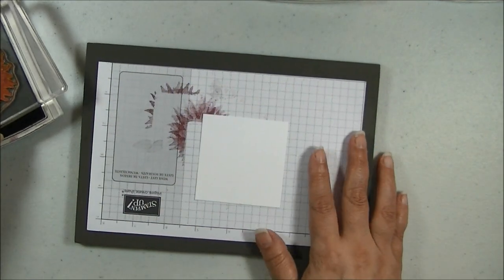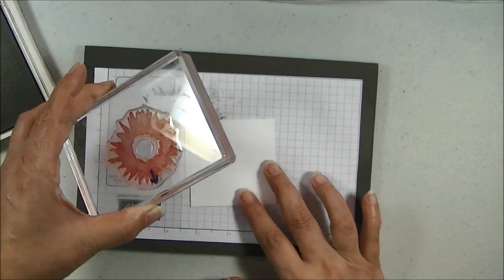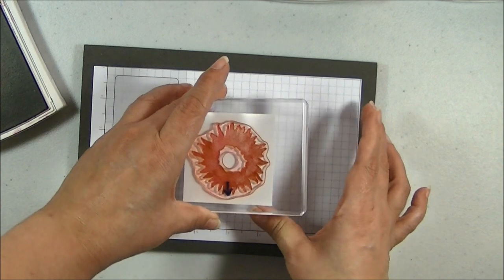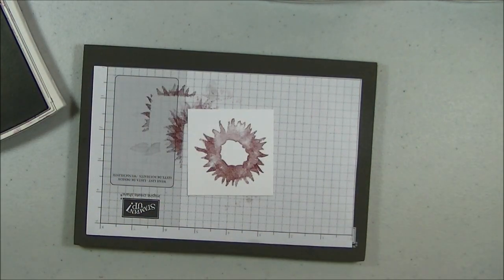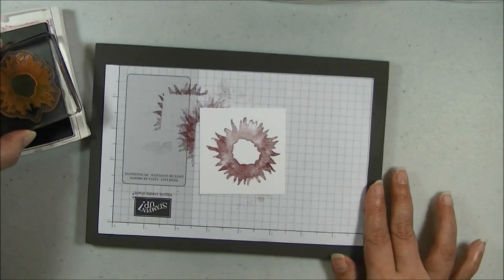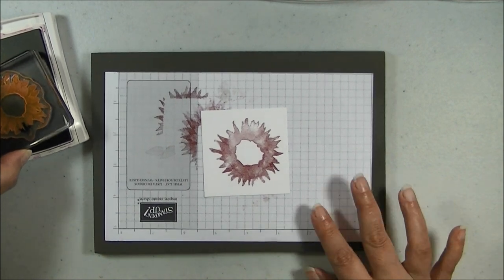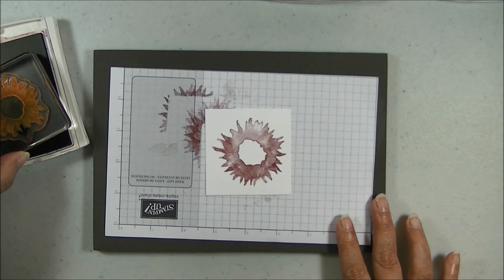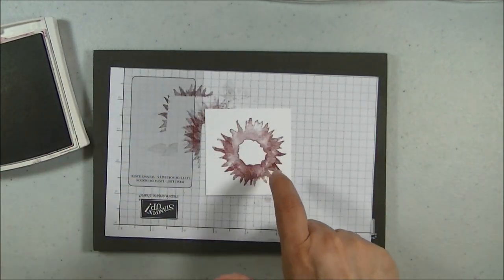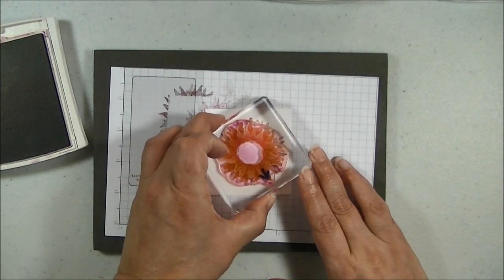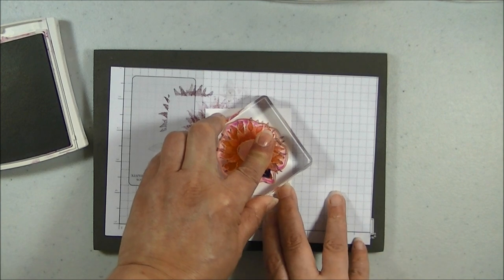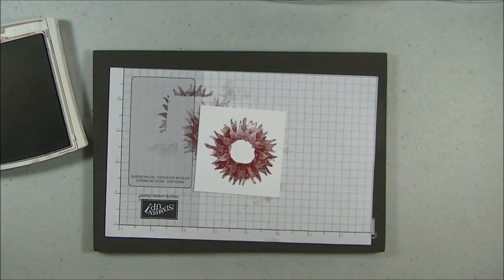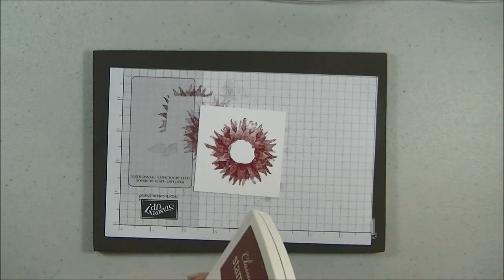So my larger of the two sunflowers, I'm inking up in my Cherry Cobbler. And I'm just going to stamp this right in the middle because we are going to fussy cut this puppy out. Like that. Then the smaller of the sunflowers, I'm also inking up in the Cherry Cobbler.